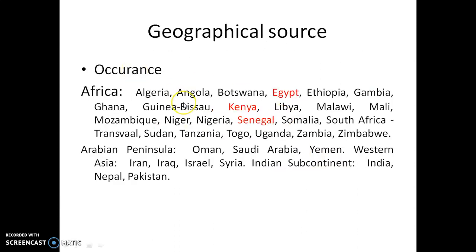The plant is indigenous to Africa and some parts of Asia. In Africa, it is available in Algeria, Angola, Botswana, Egypt, Kenya, Senegal, Somalia, Sudan, Togo, Uganda, Zambia, and Zimbabwe. These are the major sources of this particular gum from Africa.